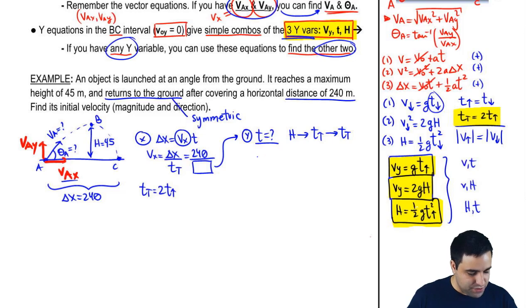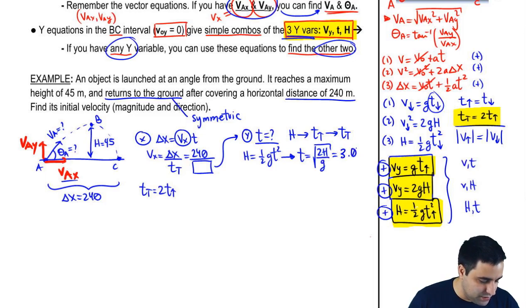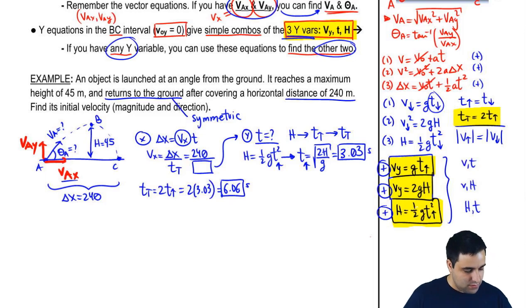So I can use the third equation here. Very straightforward. H equals half GT squared. Again, in these equations, all these numbers are positive because of the way that I simplified them in the derivation process. And I can just find T. T is the square root of 2H over G. And if you plug all these numbers in here, you get 3.03 seconds. But that's only my time to go up or the time to go down. Now, the total time is 6.06 seconds.